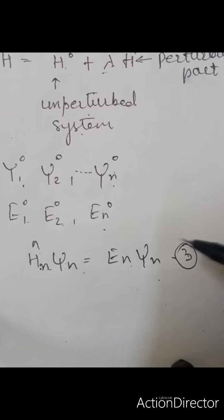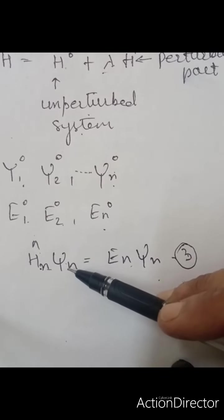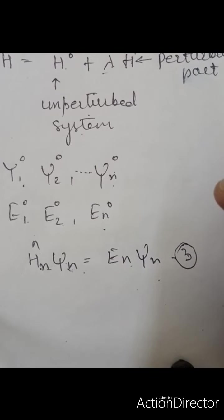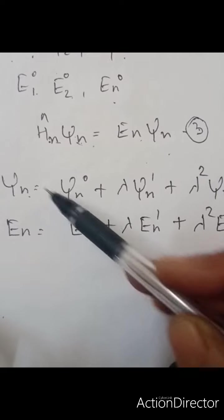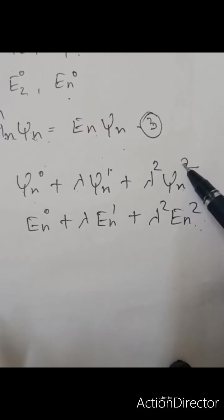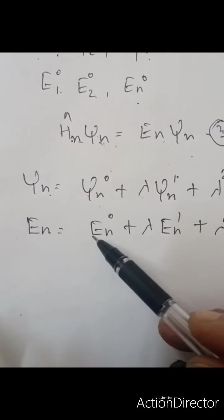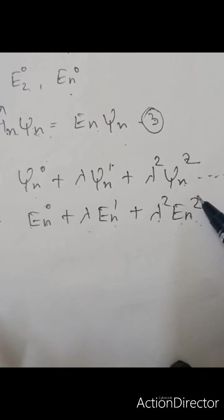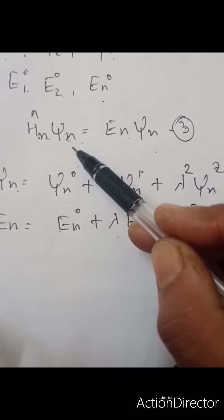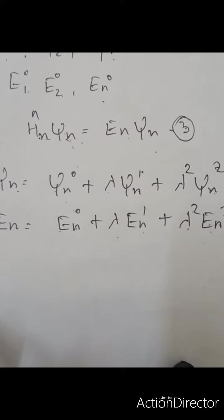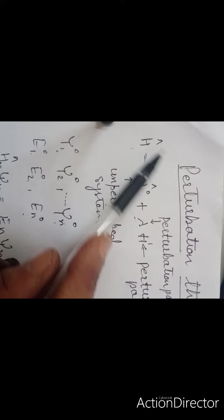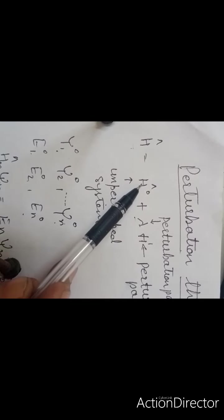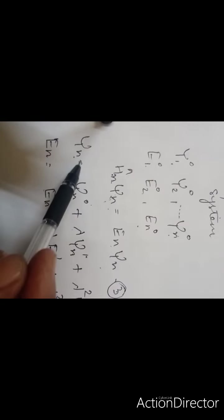Now we put the values of ψₙ and Eₙ into this equation. The values of ψₙ and Eₙ are expressed as eigenfunctions and eigenvalues in series in lambda: ψₙ = ψₙ⁰ + λψₙ¹ + λ²ψₙ² + ... and Eₙ = Eₙ⁰ + λEₙ¹ + λ²Eₙ² + ... The Hamiltonian is split as H₀ + λH′, where H₀ is the unperturbed part and λH′ is the perturbation.